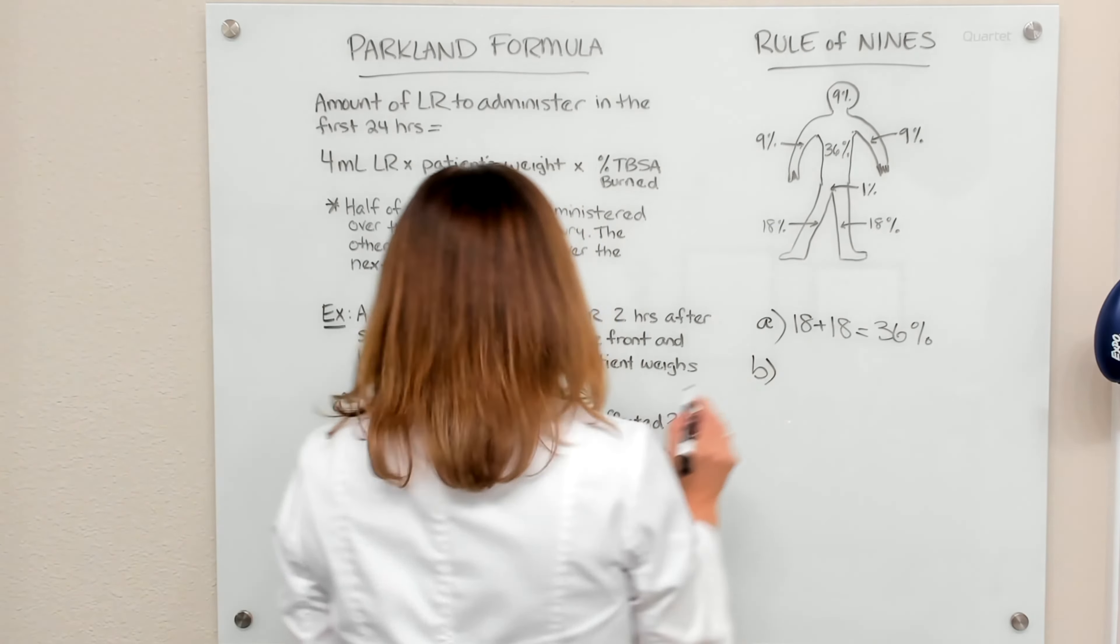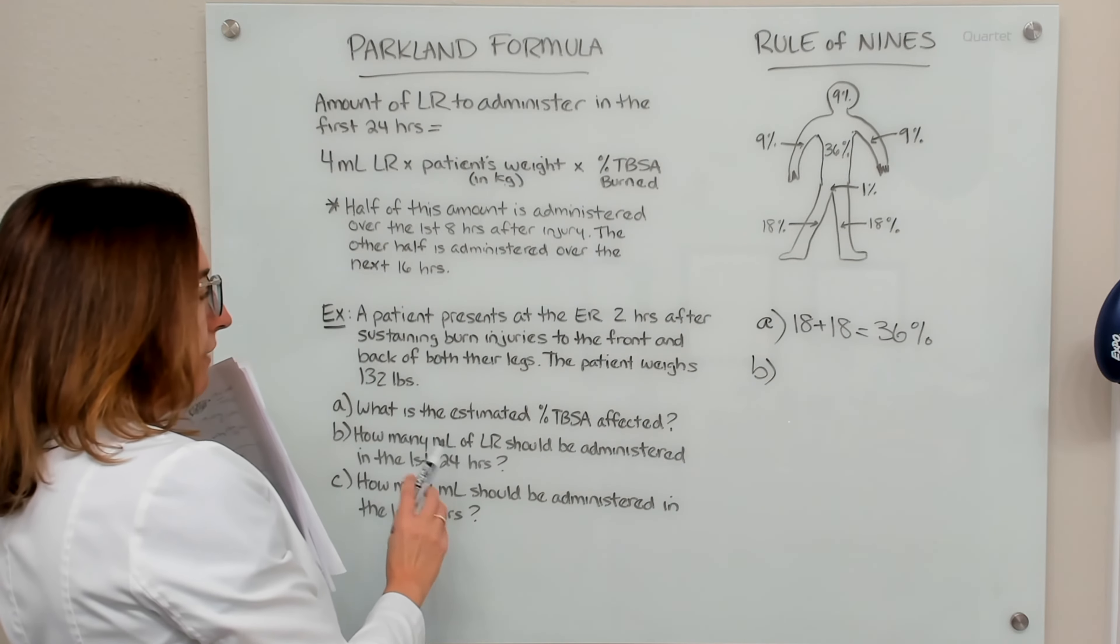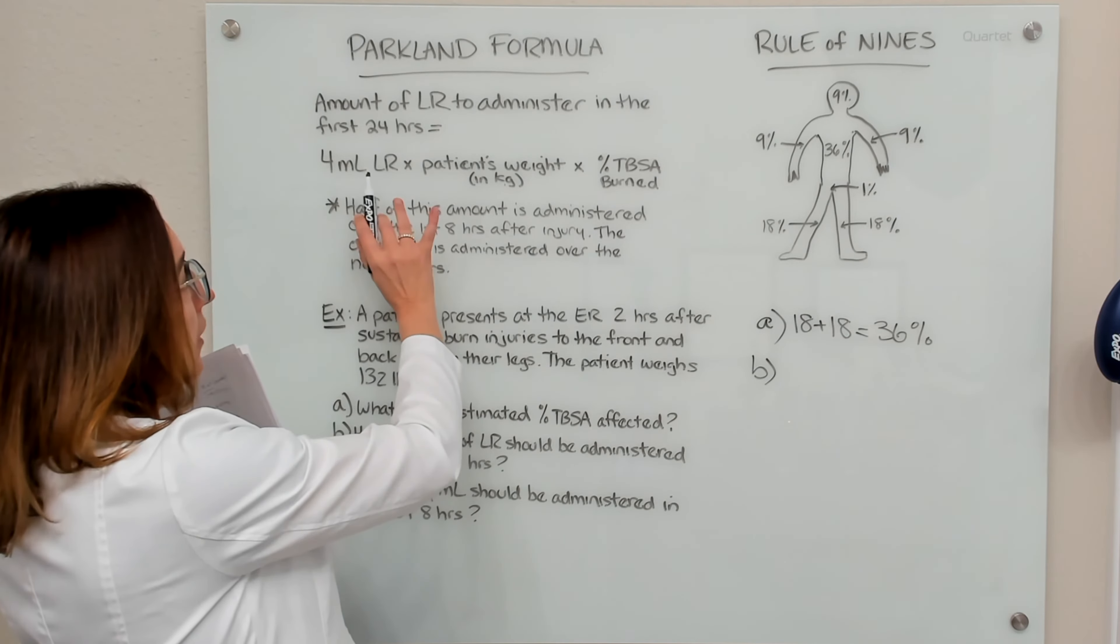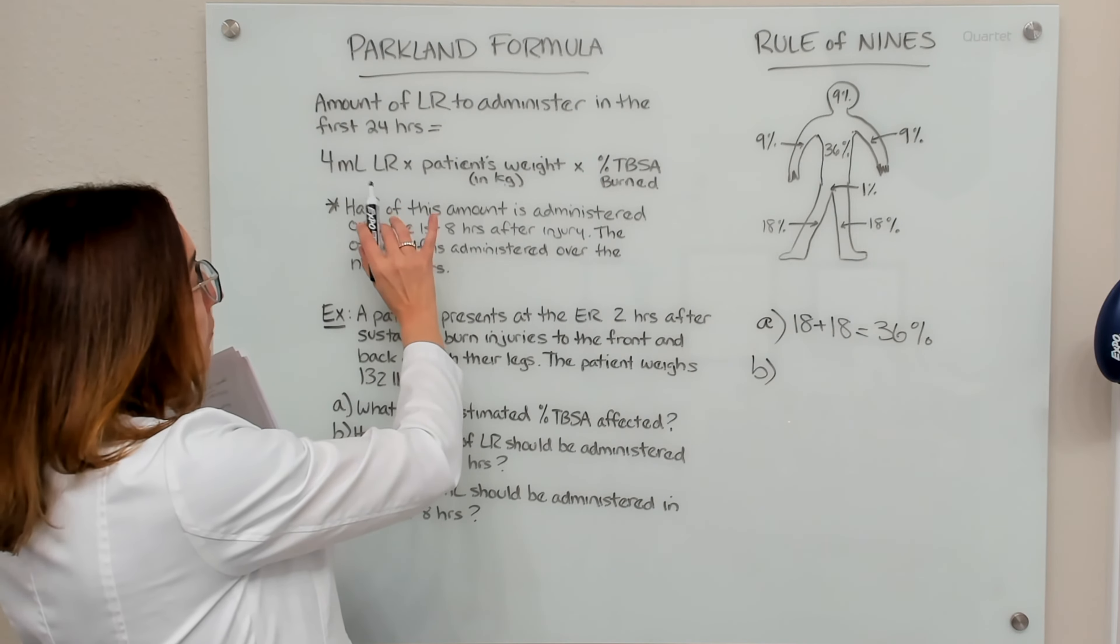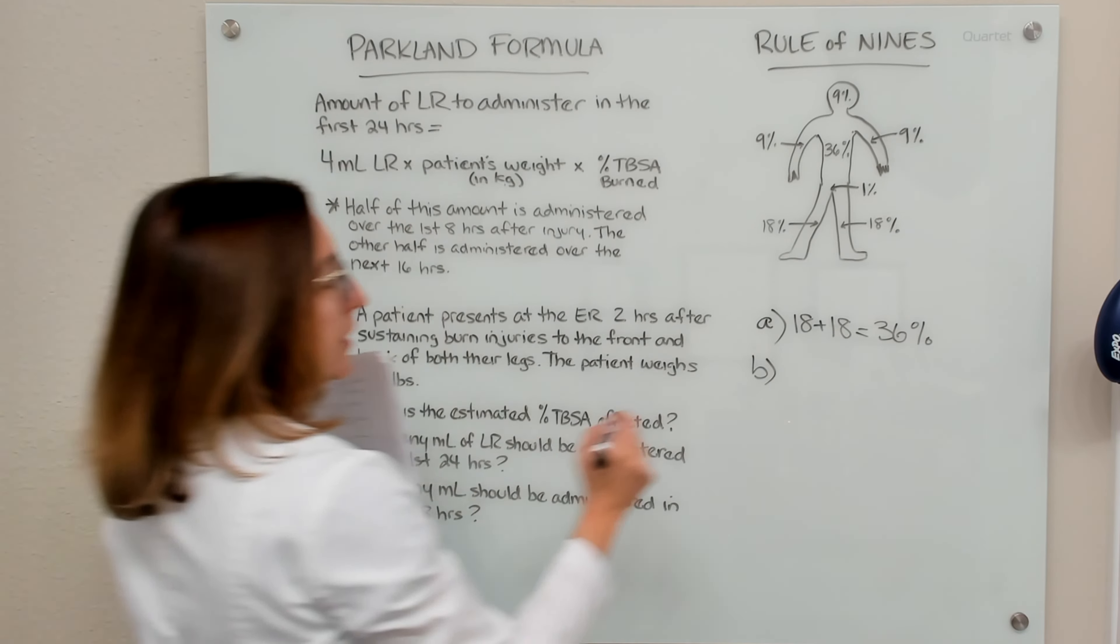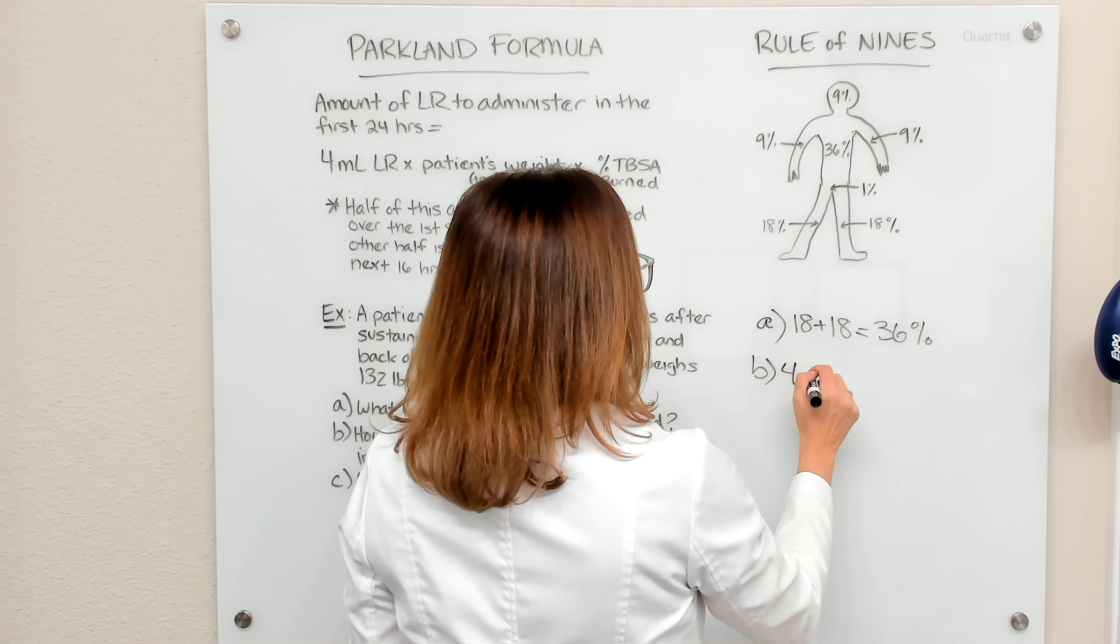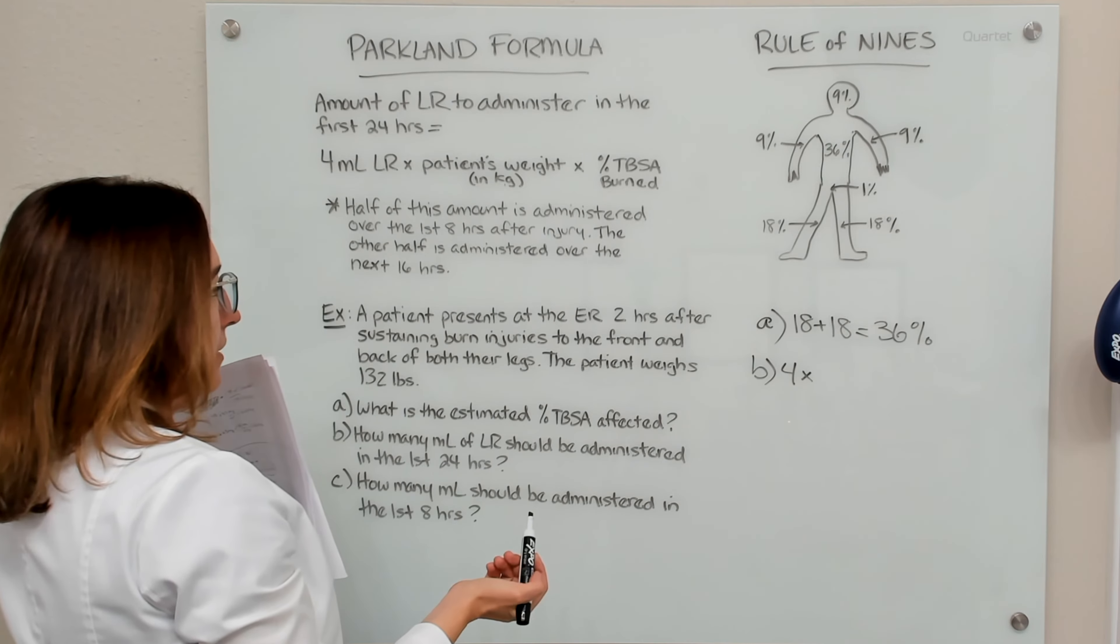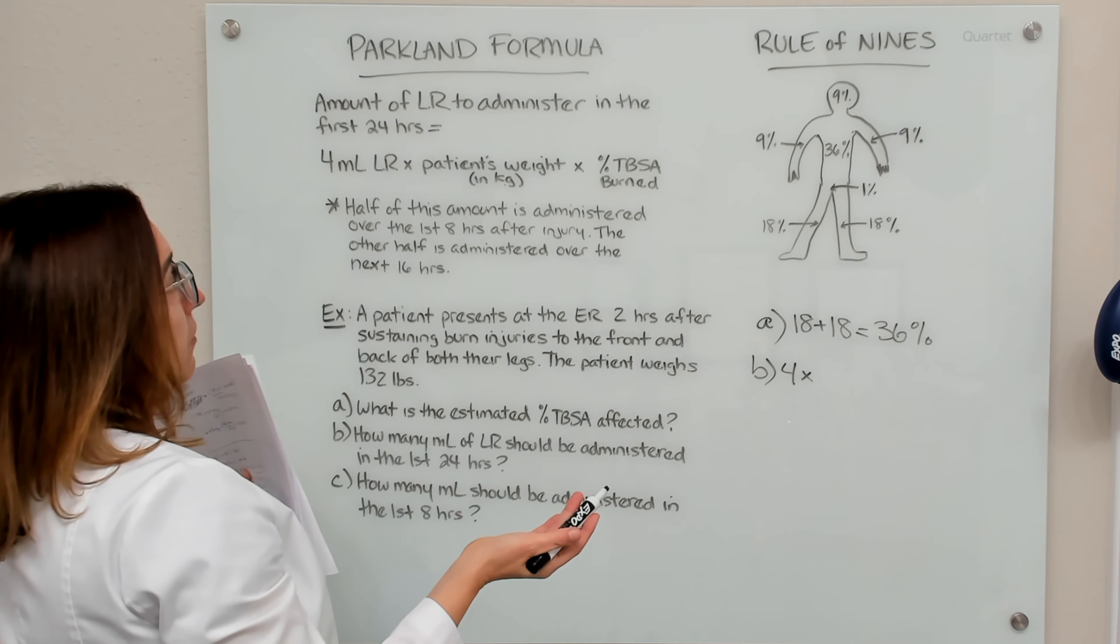Part B asks us how many milliliters of lactated ringers should be administered in the first 24 hours. So we're going to use our Parkland formula to determine this. So we're going to take four milliliters of lactated ringers times the patient's weight in kilograms, which we actually have to figure out,